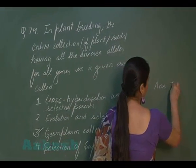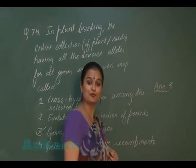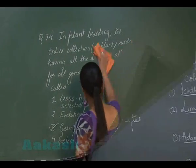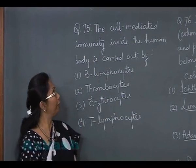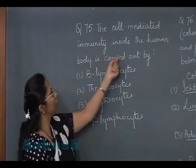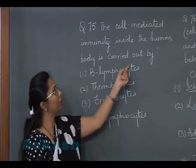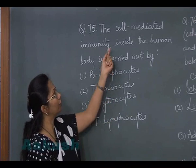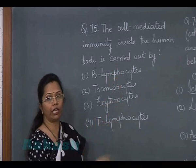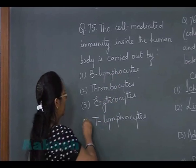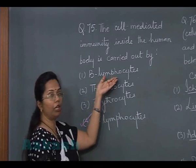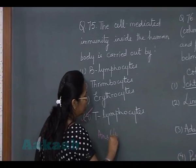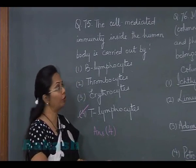Now let's discuss question number 75: cell-mediated immunity inside the human body is carried out by — this is a direct factual question. Cell-mediated immunity (CMI) is due to T lymphocytes, so the answer is option 4. B lymphocytes provide humoral immunity.